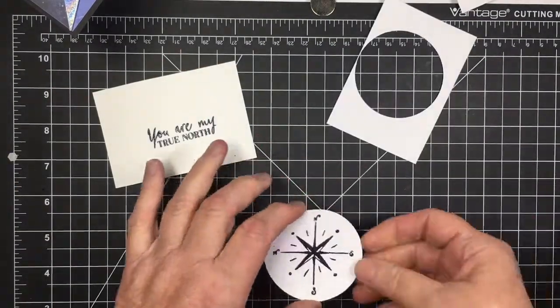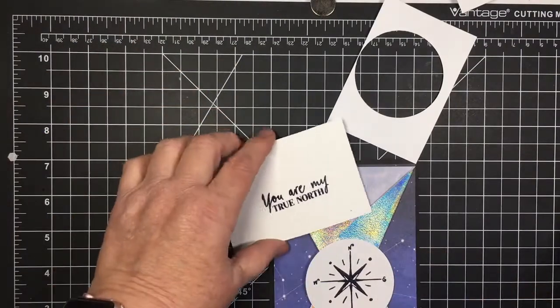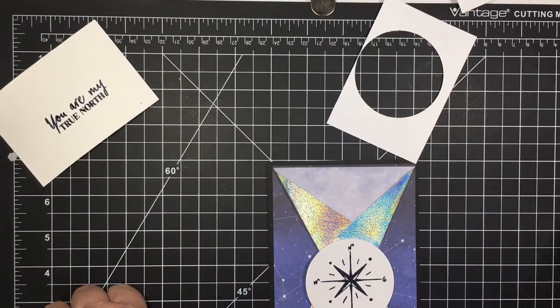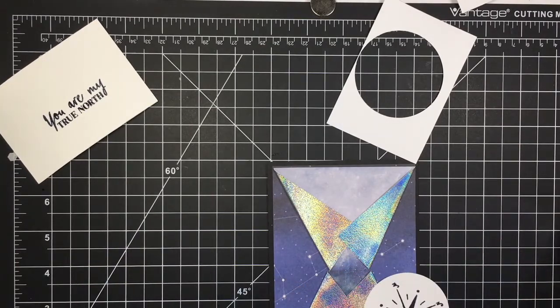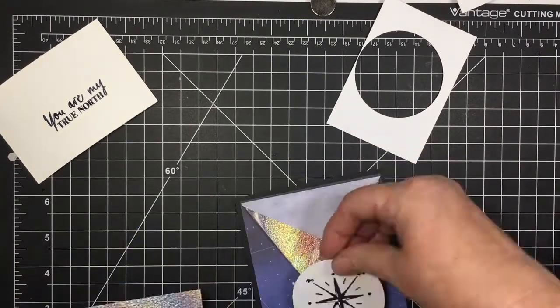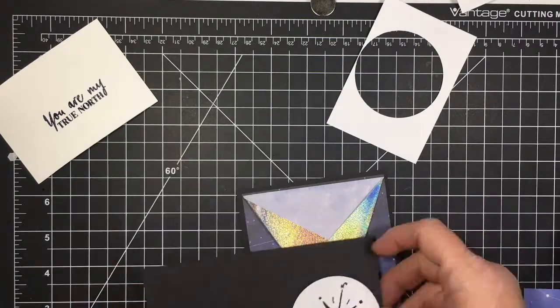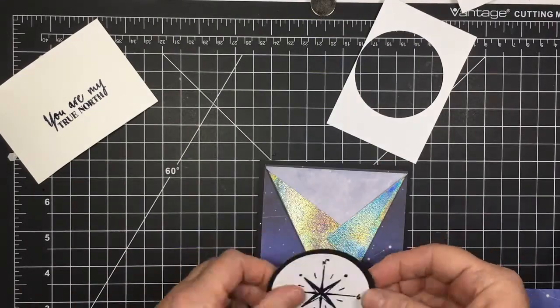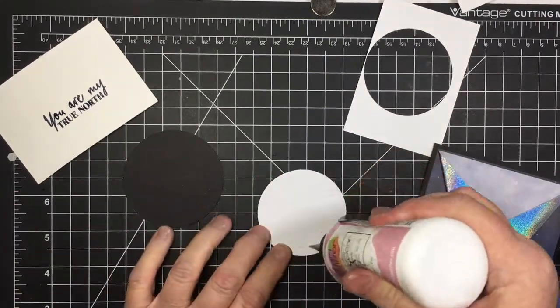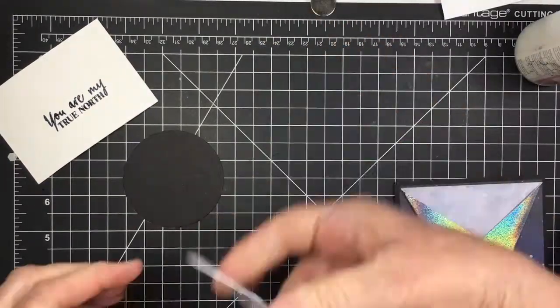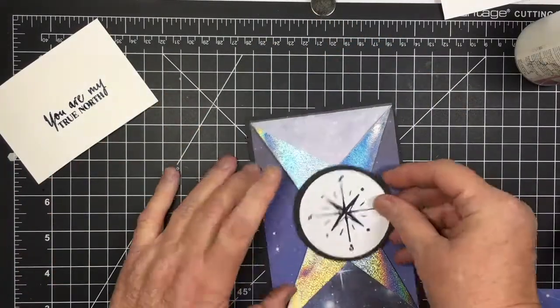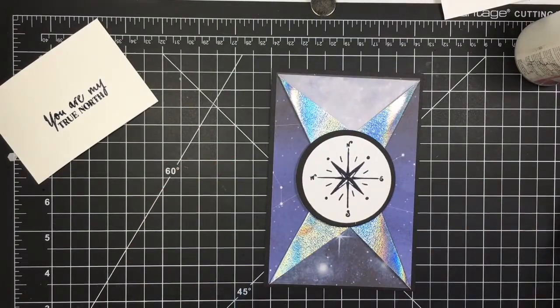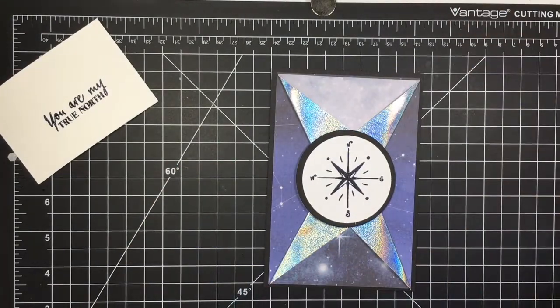So now I'm taking a 2 1/2 inch circle punch and I punched out the compass. And then I decided that I wanted to put some black behind it. So I punched out a 2 3/4 inch circle punch. And then I glued them together with Art Glitter Glue. And then I pop it up using foam tape to add it to the front of the card.